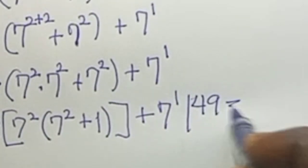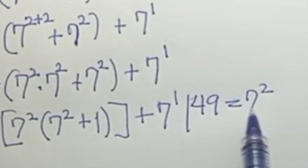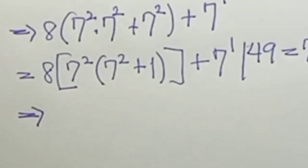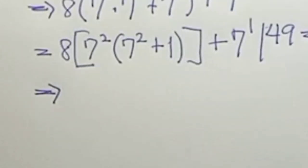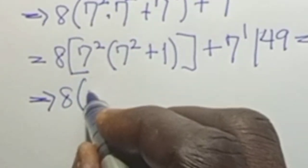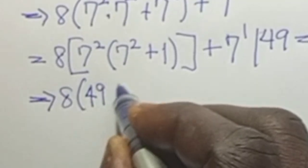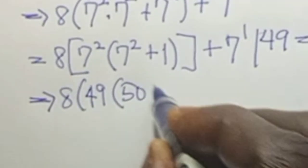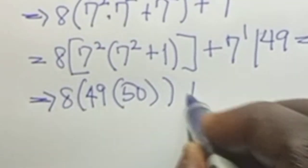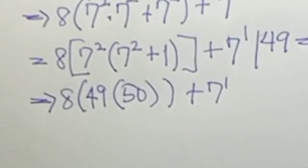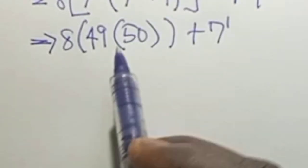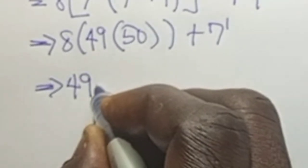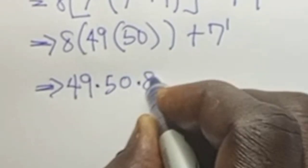Since 49 is the same as 7 to the power of 2, we replace 7² with 49. Our equation becomes 8 times 49 times the quantity 49 plus 1, that is 50, close the bracket, plus 7 to the power of 1.